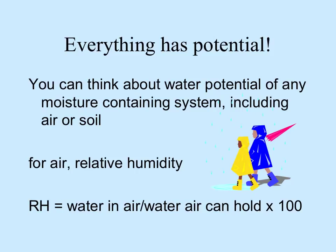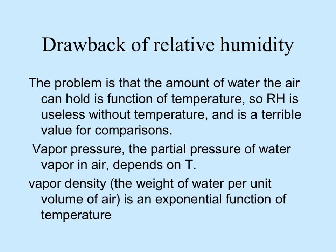You can think about the water potential of any water-containing system, including air or soil. For air, a measure of its potential is relative humidity — the proportion of water in the air compared to the maximum it can hold. Relative humidity is affected by temperature: the warmer it is, the more water air can hold. That's because vapor pressure, the partial pressure of water vapor in air, depends on temperature.